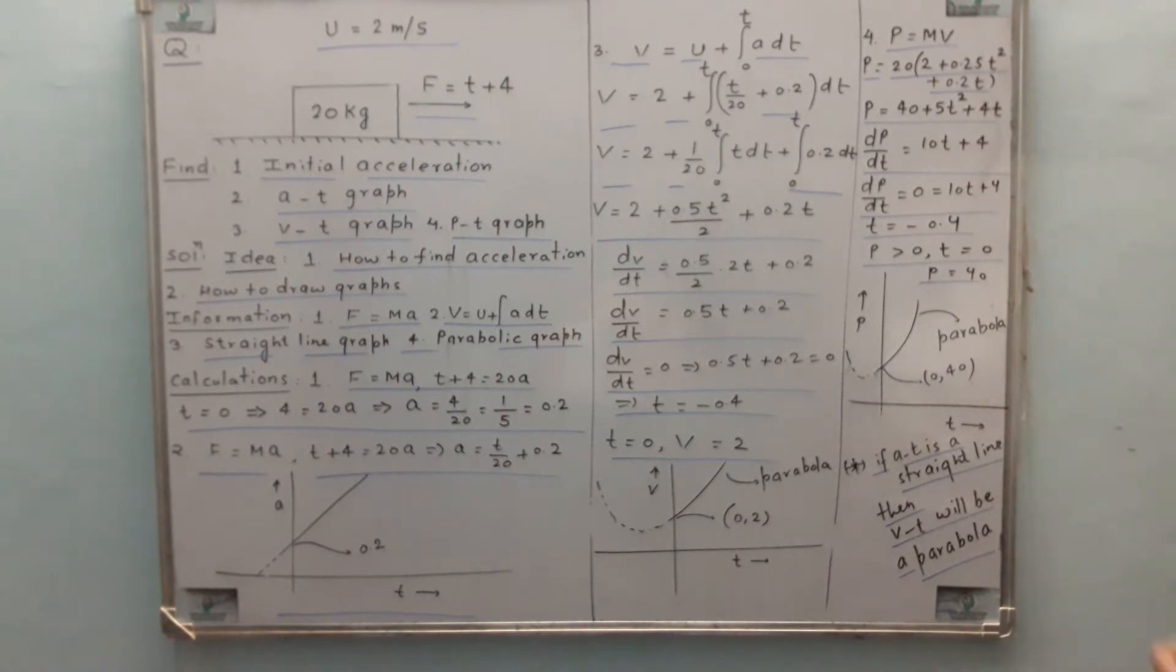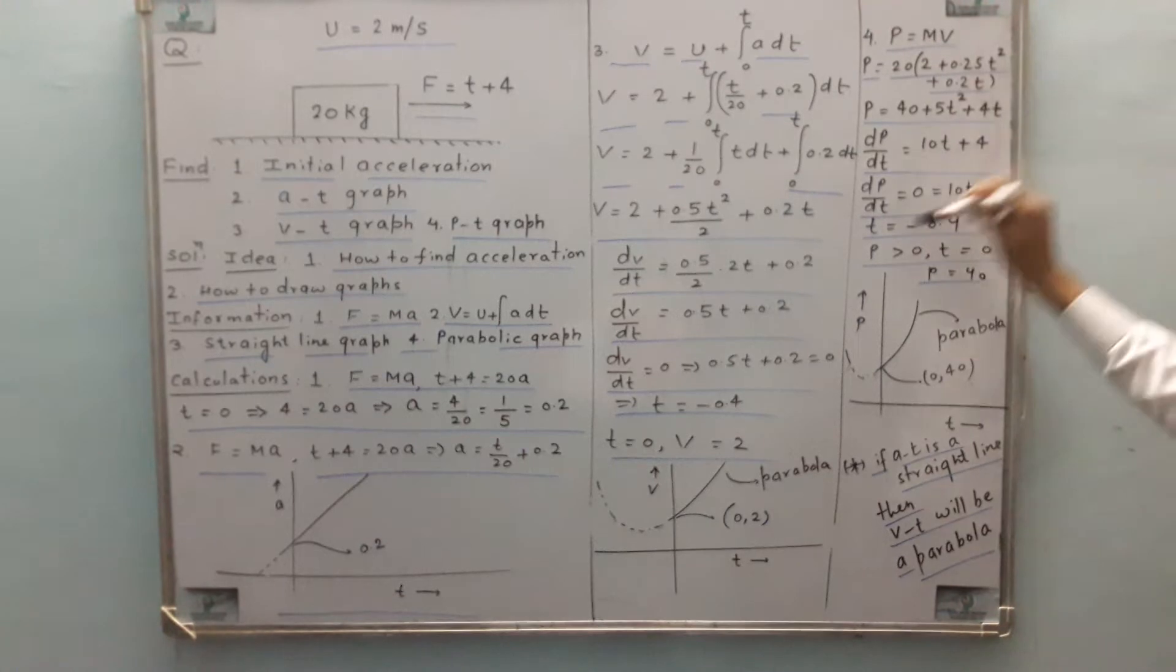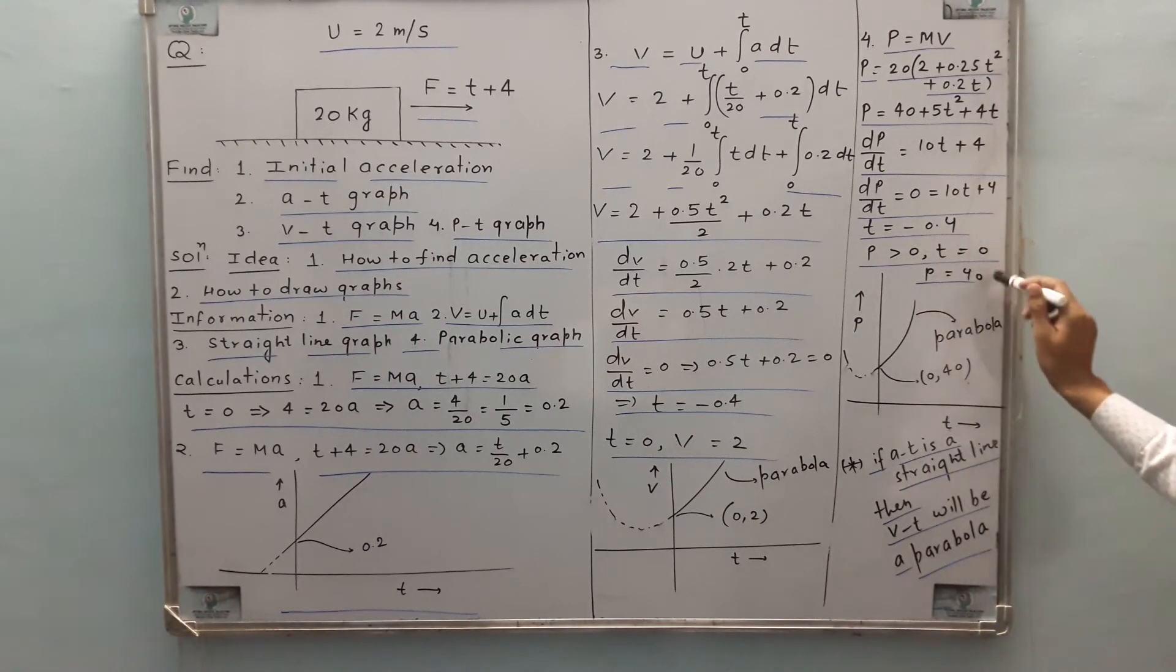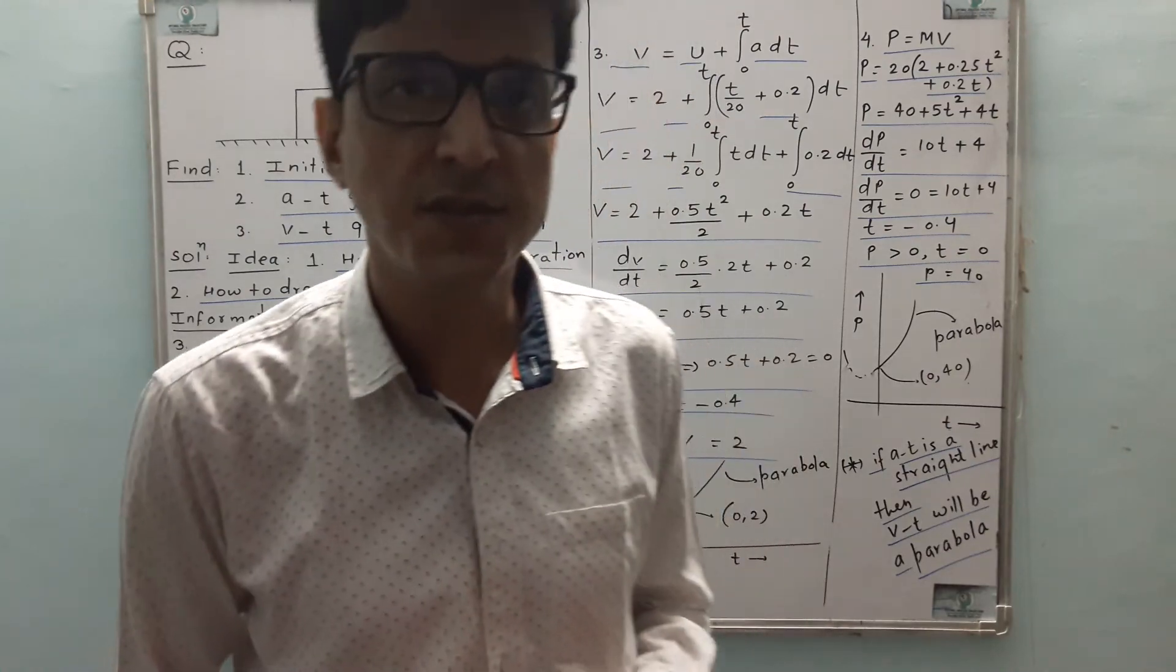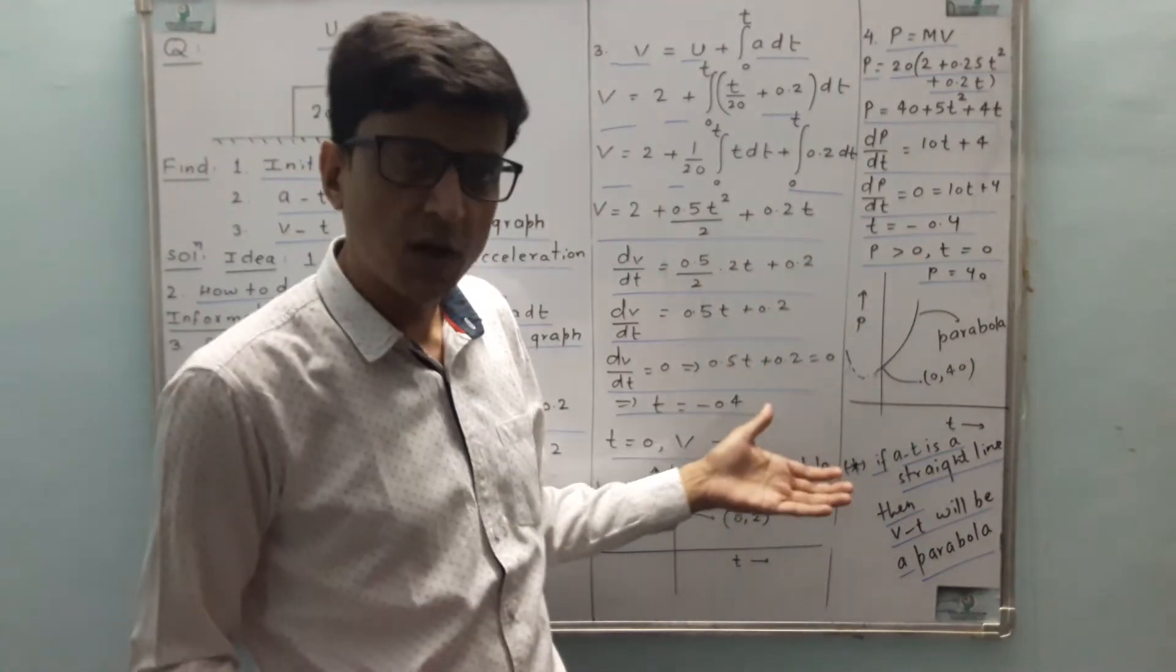Let's move forward to momentum. Momentum equals mass times velocity. So this is the expression, differentiated t is minus 0.4. So p is positive at t equals 0, so p is 40. At t equals minus 0.4, p is positive. You can see it from the calculations. So this will also be a parabola.